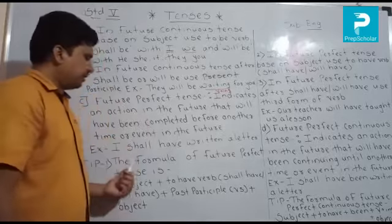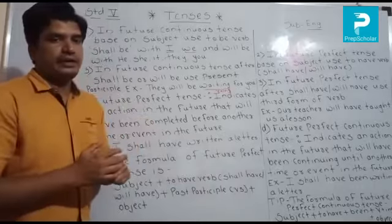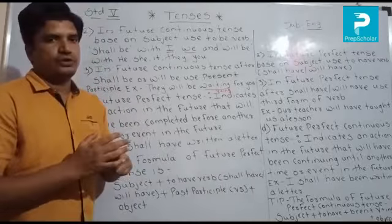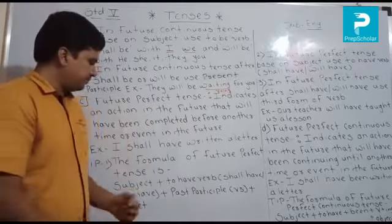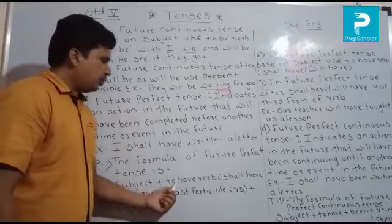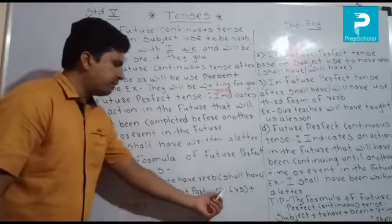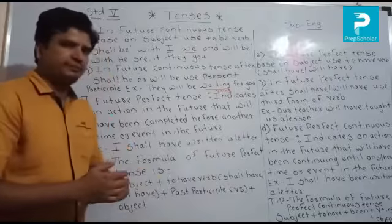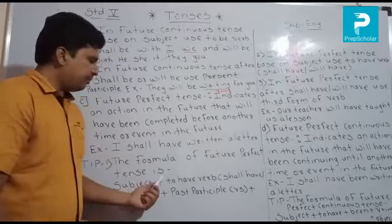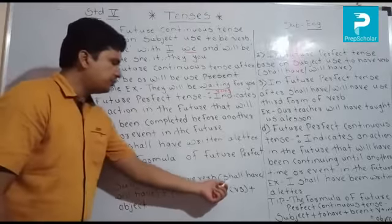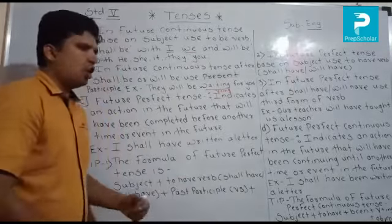Tip number one: the formula of future perfect tense. The formula is: Subject + to have verb (shall have / will have) + past participle (V3) + object.